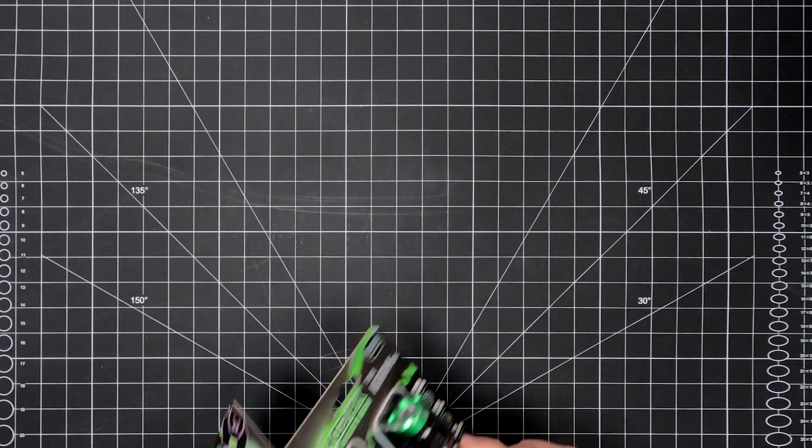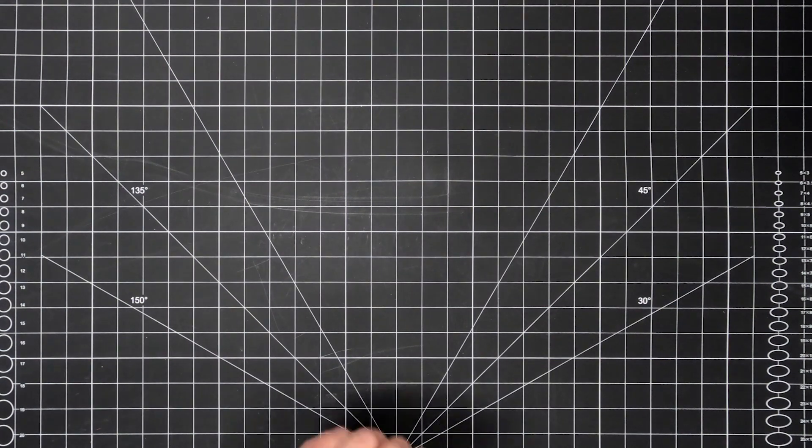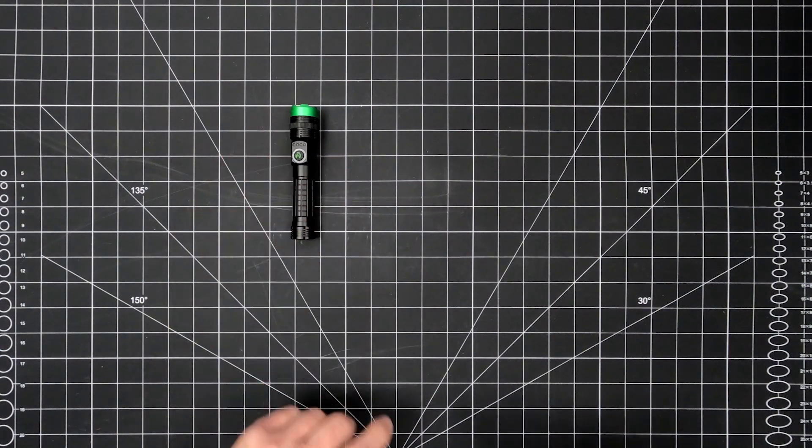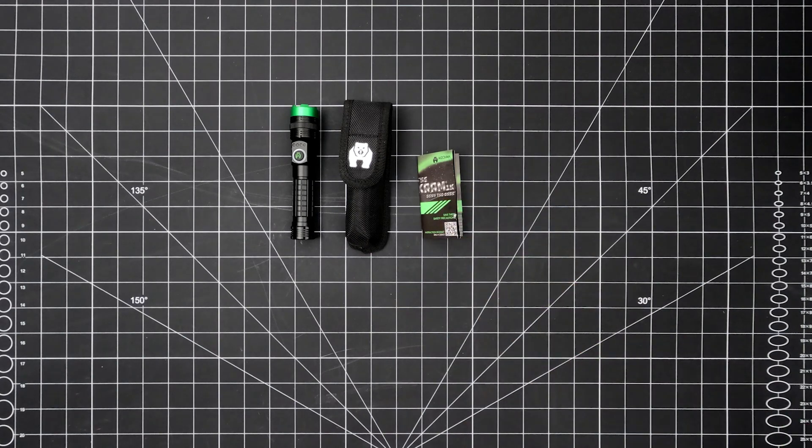Packaging is nearly identical for both models, and each contains the flashlight, a fitted sheath, an instruction booklet, and a magnetic charging cable.